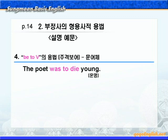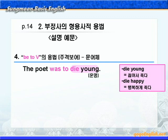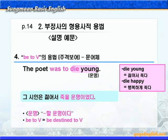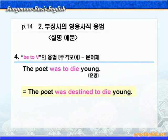be-to부정사가 운명으로 해석되는 경우입니다. 뭐뭐 할 운명이다, 이런 의미가 됩니다. 'The poet was to die young.' 'die young'은 젊어서 죽다라는 뜻입니다. 유사 표현으로 'die happy'는 행복하게 죽다. 모두 부사가 아닌 형용사가 뒤에 왔다는 점 조심해야겠습니다. '그 시인은 젊어서 죽을 운명이었다.' be-to부정사가 운명의 의미일 때는 'be destined to 부정사'로 바꿔 쓸 수 있습니다. 'The poet was destined to die young.'